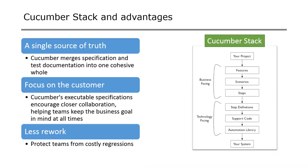The main advantage of Cucumber is it provides a single source of truth — business will see what developers see, and everybody sees the same examples for the specifications provided. The focus is always on the customer; we get actual executable specifications from the customer. It reduces rework because we capture specifications correctly, validation is easier, and regression is simple since every build has automated regression — so costly regressions are avoided.